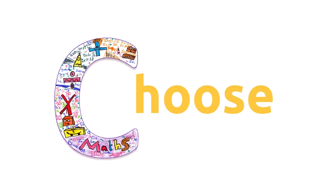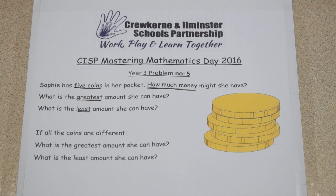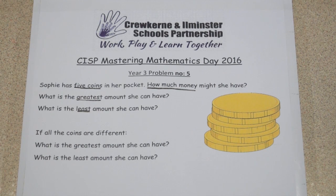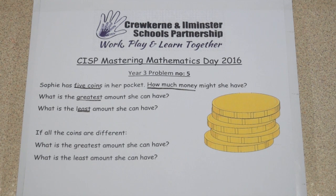C is for choose the calculation. Now we need to choose the calculation. What do you think it is going to be — adding, subtracting, multiplying or dividing? Well, we are adding up five different amounts, so I think it would be adding.